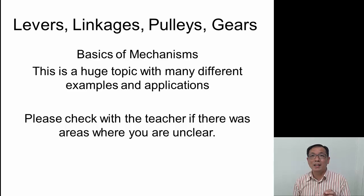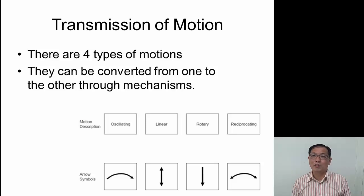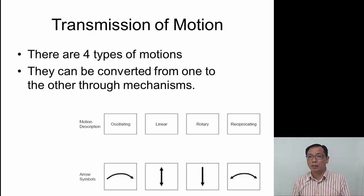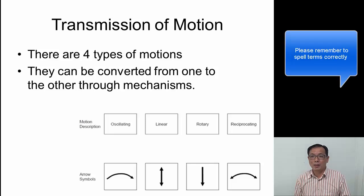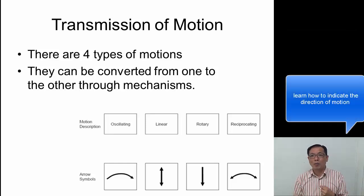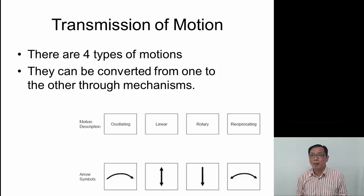Please check with the teacher if there are any questions or any areas that are unclear, and then we can clarify. So let's go. Our first thing we want to talk about is the transmission of motion. There are basically four types of motion — they can be converted from one form to another through the use of mechanisms. Please take note: there's oscillation, linear, rotary, and reciprocating. These are the four basic types of motion and they can be converted from one to the other.